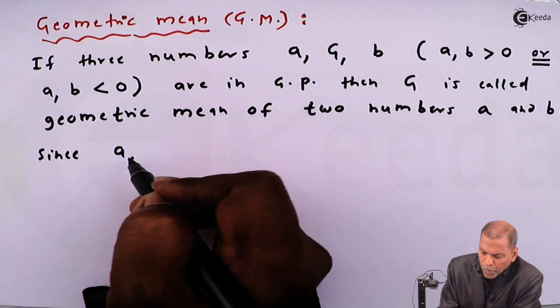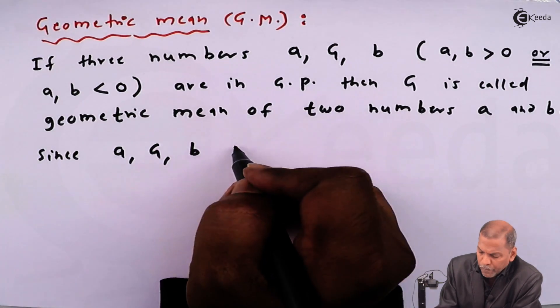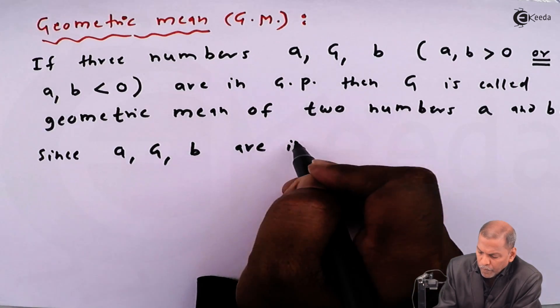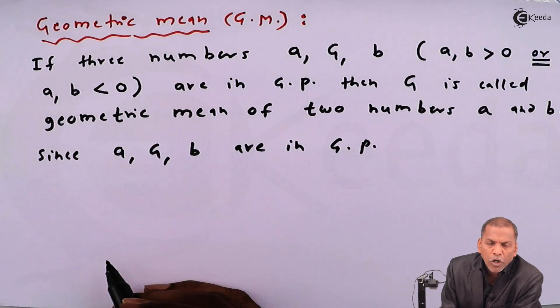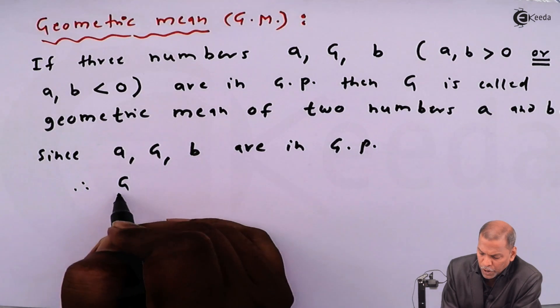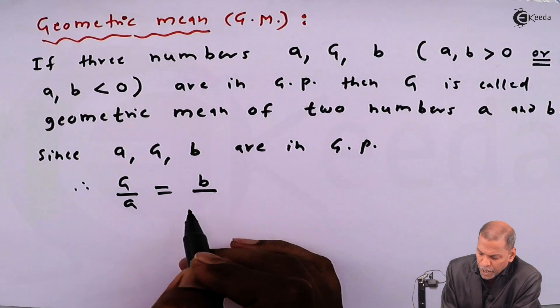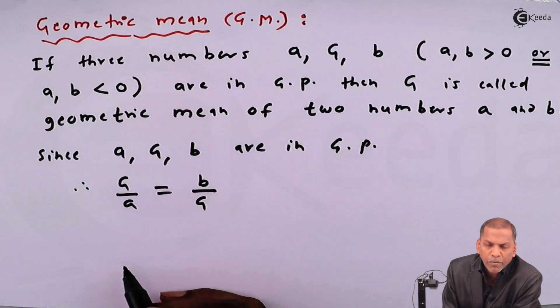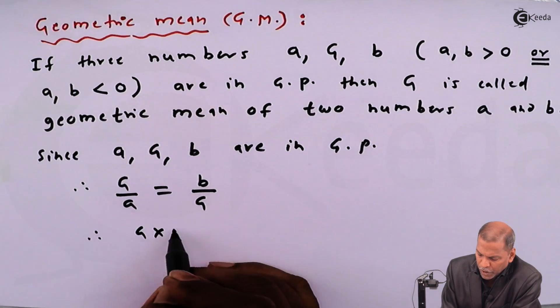Since a, G, and b are in GP, for GP we have to remember the common ratio is always constant. Therefore, G/a must equal b/G.